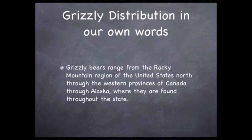Now write down your own section on the distribution using your own words to piece together your notes. Here's an example: grizzly bears range from the Rocky Mountain region of the United States, north through the western provinces of Canada, through Alaska, where they are found throughout the state. Your section on the distribution won't be exactly like mine — find a different way of piecing the notes together. It's more valuable to do that, making some mistakes, than to just copy the perfect stuff from the wildlife cards.